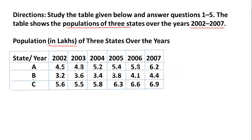The population is given in lakhs. The three states are State A, State B, and State C, from 2002 to 2007. In State A, the population values are: 2002: 4.5, 2003: 4.8, 2004: 5.2, 2005: 5.4, 2006: 5.8, 2007: 6.2. Population in lakhs for all 3 states is given in this table.